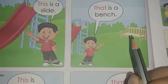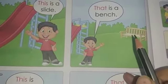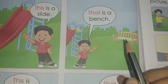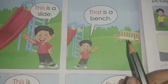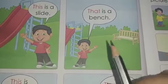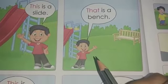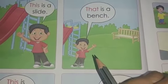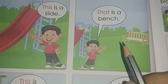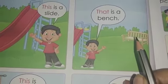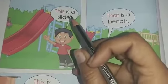On the contrary, the boy is close to the slide but there is a bench which is far off from him. So in this case you will say 'That is a bench'. Agar yeh bench jiske paas mein hoti — had it been nearer to him, we would have said 'This is a bench'. But because it's far off, we say 'That is a bench'.